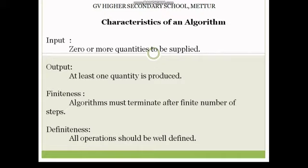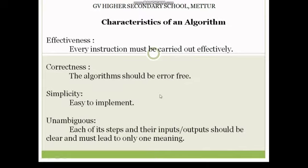Third, finiteness: the algorithm must be terminated after a finite number of steps — one limited period. Fourth, well-defined: that means, for example, dividing by zero gives an unacceptable result, and taking the square root of a negative number is unacceptable. So each step must be clearly defined. These are the first four characteristics.